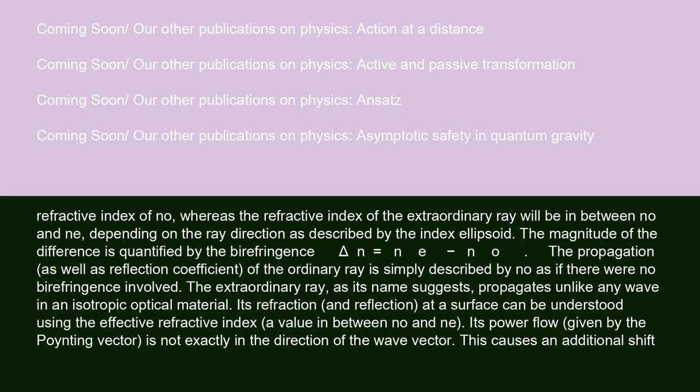The magnitude of the difference is quantified by the birefringence delta-n equals n-e minus n-o. The propagation as well as reflection coefficient of the ordinary ray is simply described by n-o, as if there were no birefringence involved. The extraordinary ray propagates unlike any wave in an isotropic optical material. Its refraction and reflection at a surface can be understood using the effective refractive index, a value between n-o and n-e. Its power flow, given by the Poynting vector, is not exactly in the direction of the wave vector.